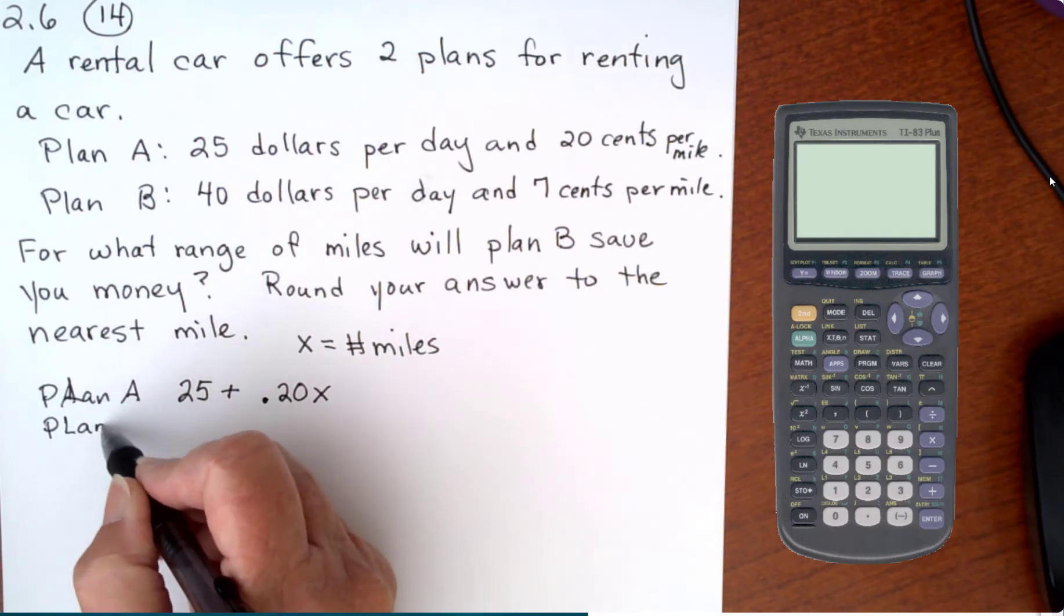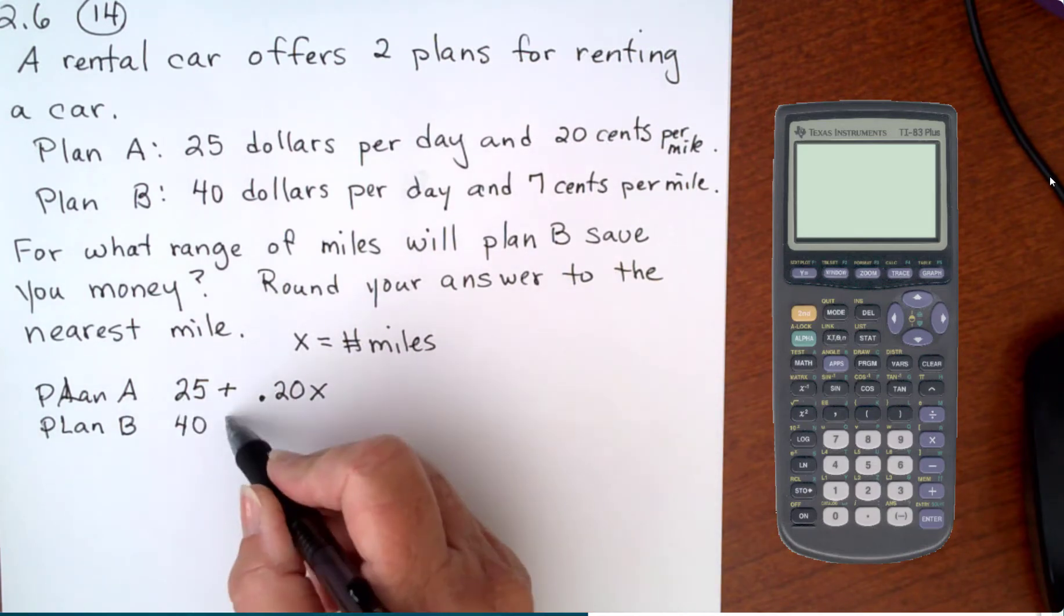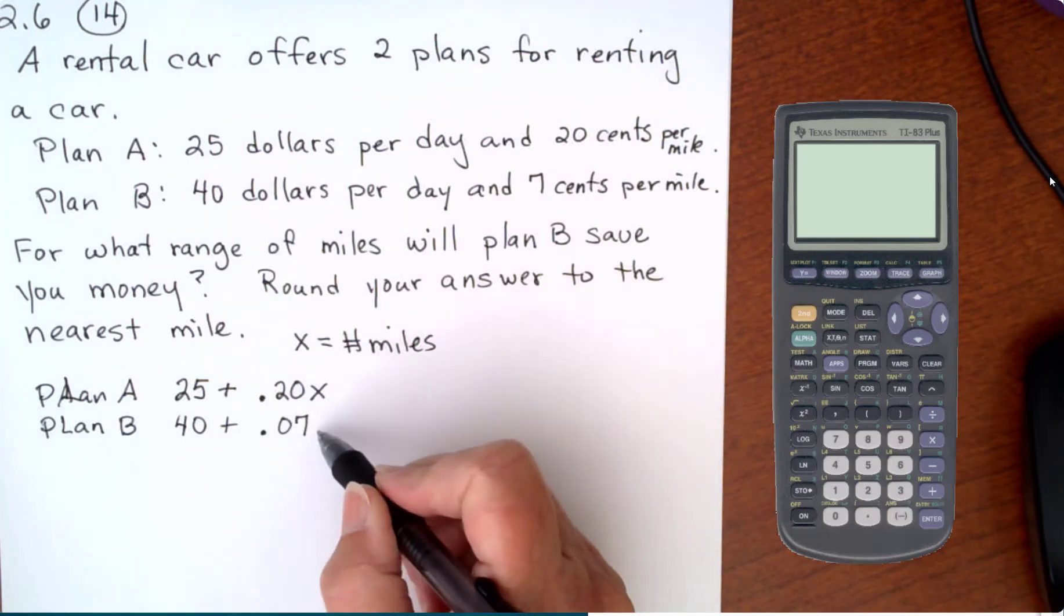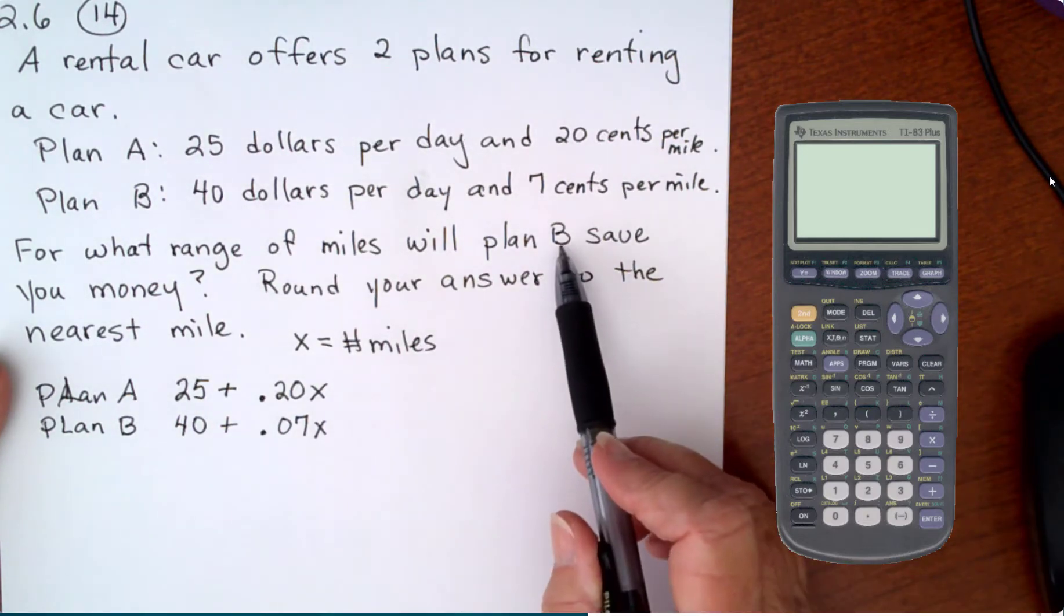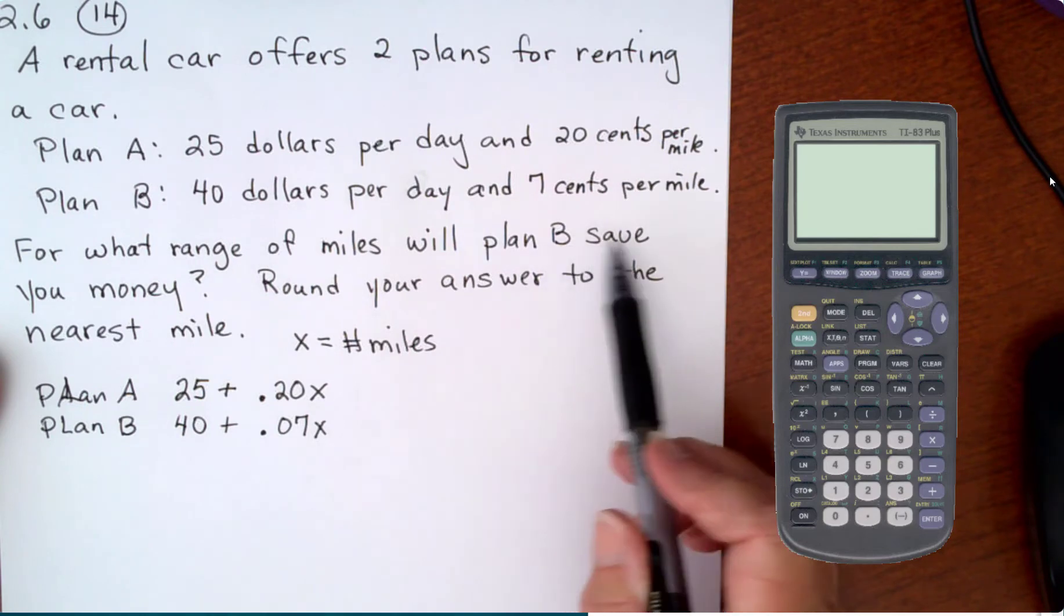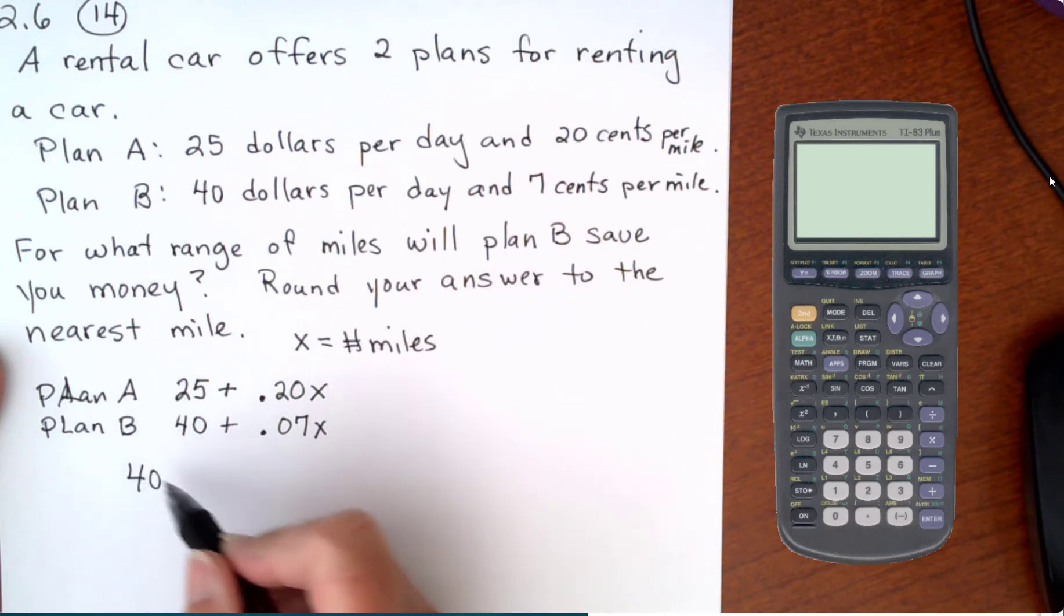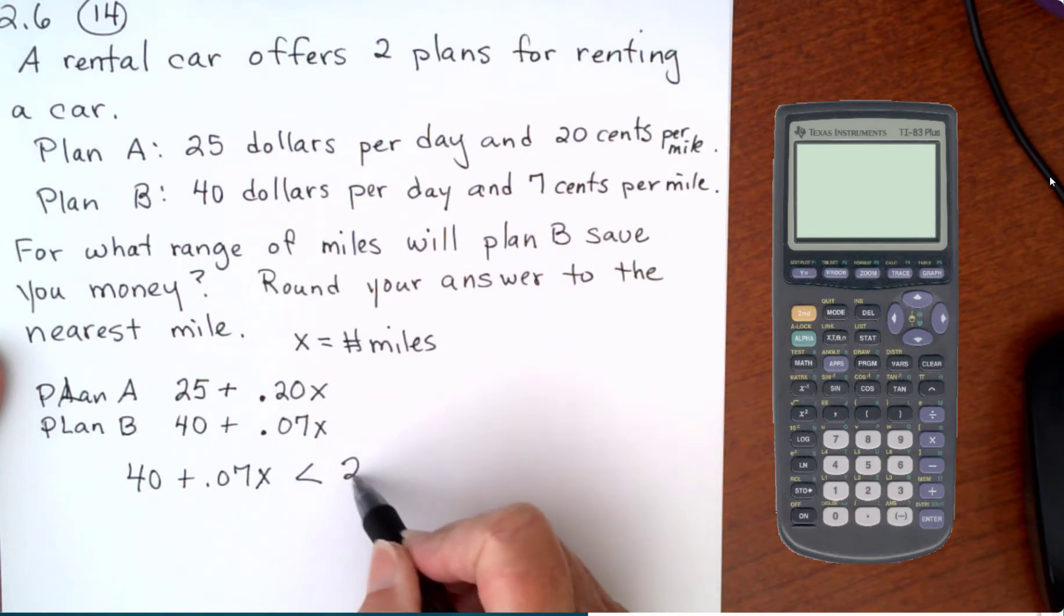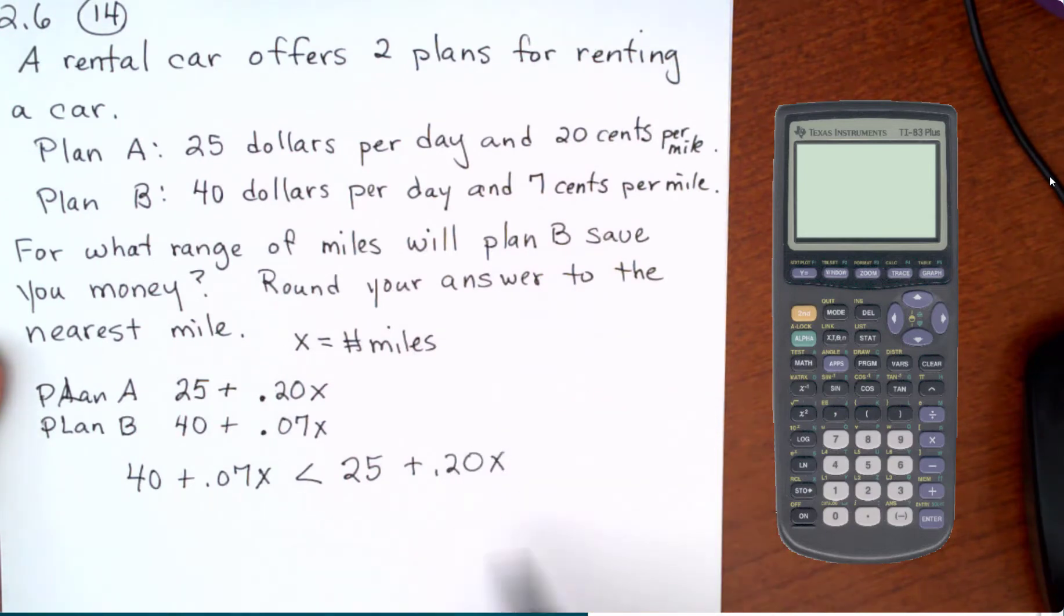Plan B will be $40 a day plus 7 cents, so 0.07 times the number of miles. So we want B to be a better buy, so it's going to save us money. So it needs to be less than Plan A. And if you wrote it the other way with this one in front, then your symbol would go the other direction.